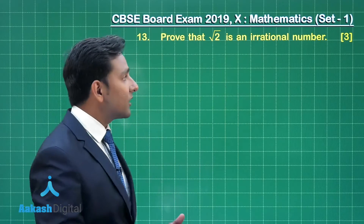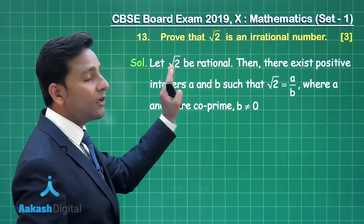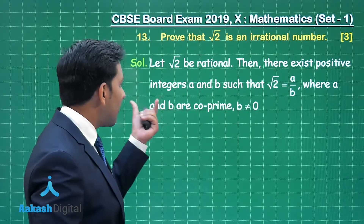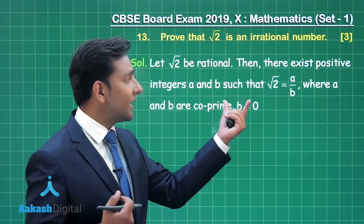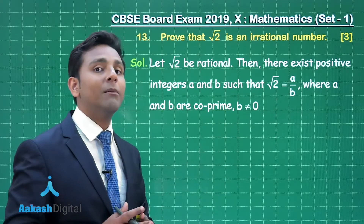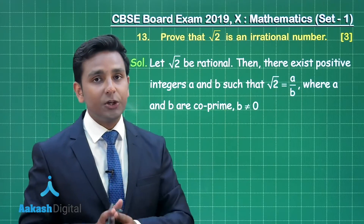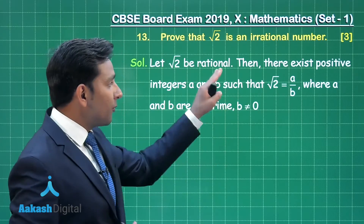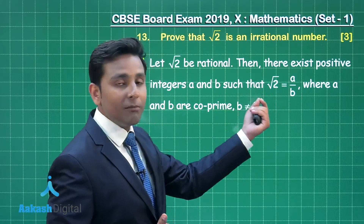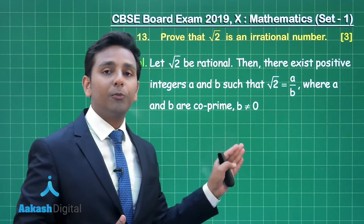We will solve this question using the contradiction method. First of all, we will assume √2 to be rational. Then there exist positive integers a and b such that √2 can be written as a upon b, where a and b are co-prime numbers, provided b is not equal to 0. So we are assuming √2 is a rational number and representing it in the form a upon b where a and b are co-prime numbers.